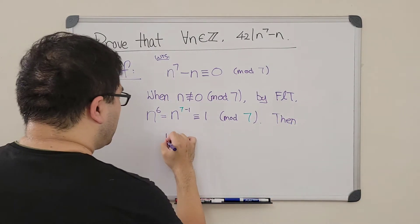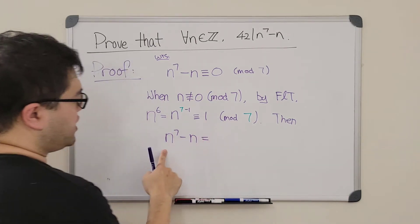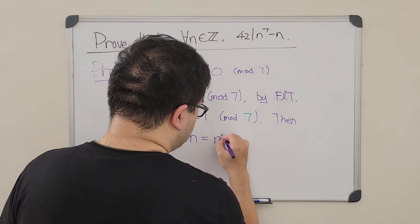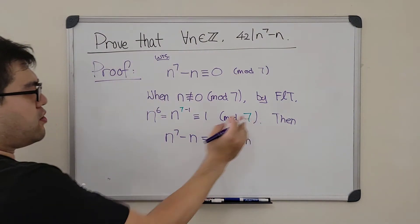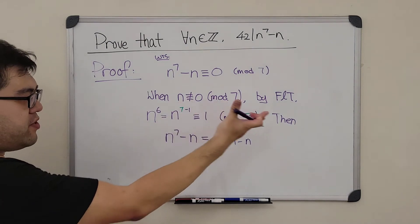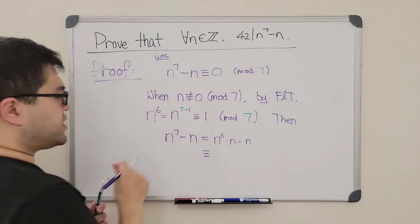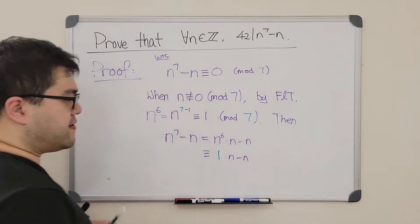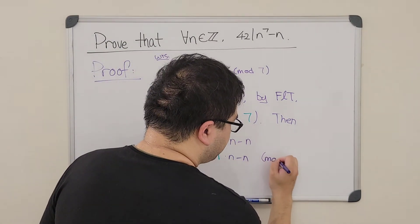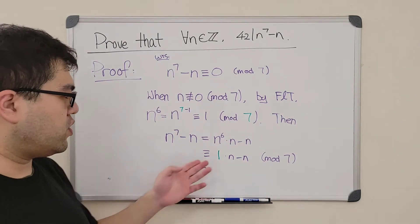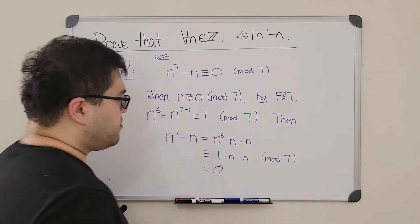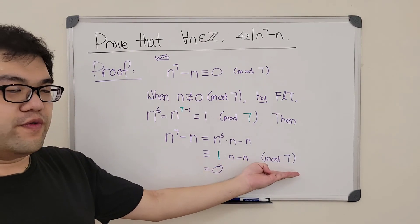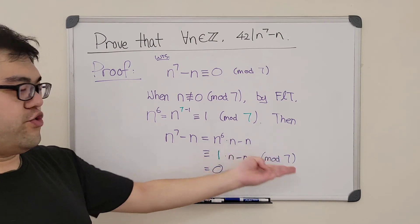We can quickly finish the proof: n to the seventh power minus n equals n to the sixth power times n minus n. Substituting from Fermat's Little Theorem, n to the sixth is congruent to 1 mod 7, so this becomes 1 times n minus n, which is zero. Therefore, n to the seventh power minus n is also congruent to zero mod 7, meaning the expression is a multiple of 7.